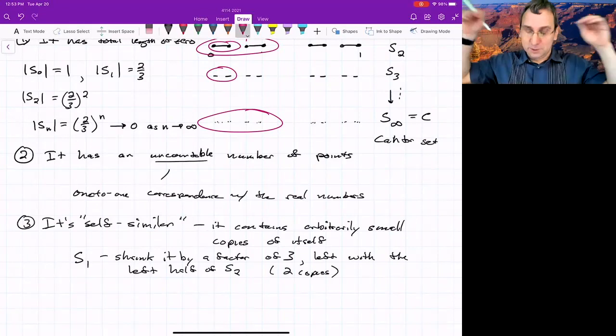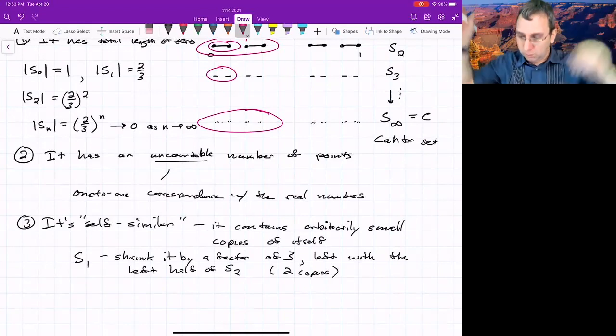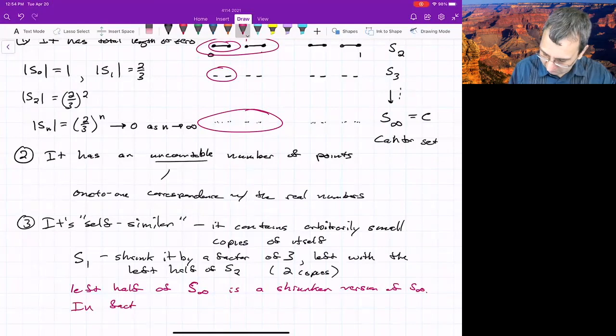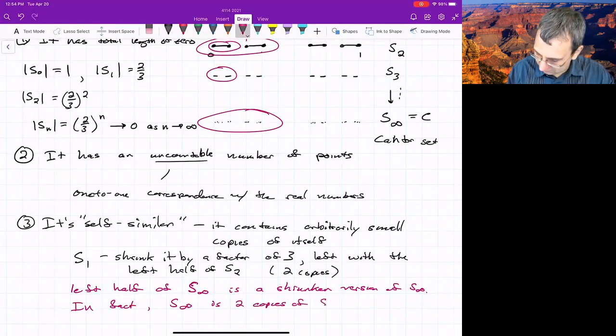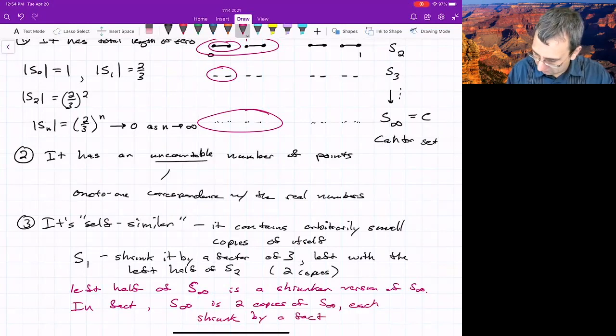And then your mind should blow. Whoa. So we might say, in fact, S infinity is two copies of S infinity, each shrunk by a factor of three. That's weird.